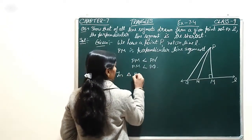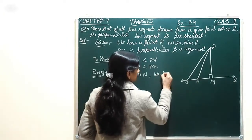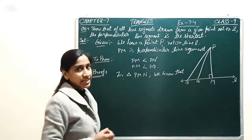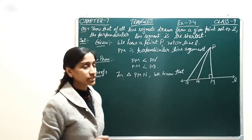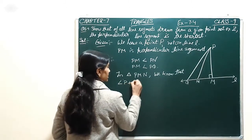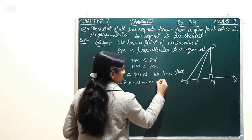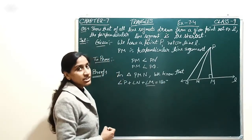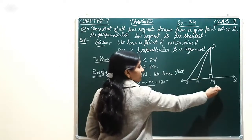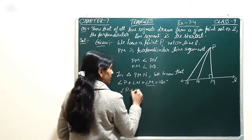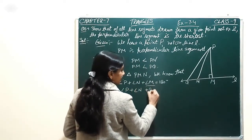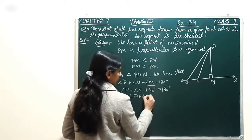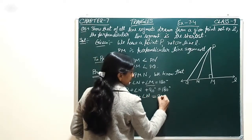In triangle PMN, we know that the sum of angles of any triangle is 180 degrees. So, angle P plus angle N plus angle M is equal to 180 degrees. And we know that angle M is 90 degrees, because PM is the perpendicular. So, angle P plus angle N plus 90 is equal to 180, which gives angle P plus angle N is equal to 90 degrees.